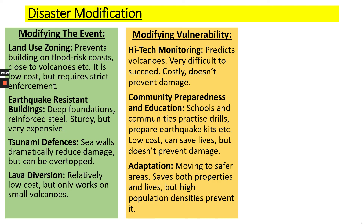Modifying the vulnerability of a place is directly related to the power model. High-tech monitoring, as discussed with predicting volcanoes, can be successful but is costly and doesn't actually prevent the damage. What we can do is land use zone and evacuate areas where we know a volcanic eruption or earthquake is imminent. We can have community preparedness in education — practising drills in schools and providing earthquake kits. This is all low cost and can save lives, but it doesn't prevent the damage itself. We can also try to adapt and move to safer areas, though highly dense populated areas struggle with this because of the sheer number of people involved.